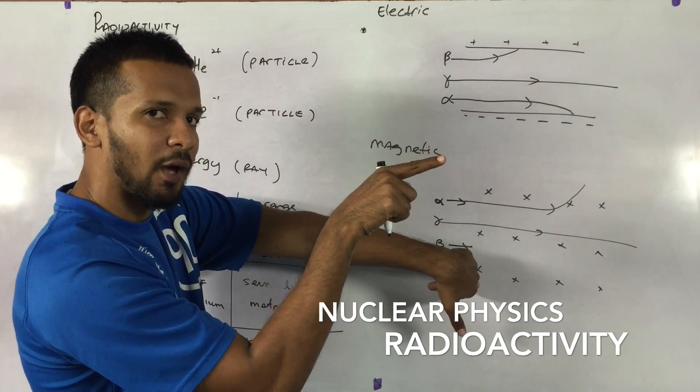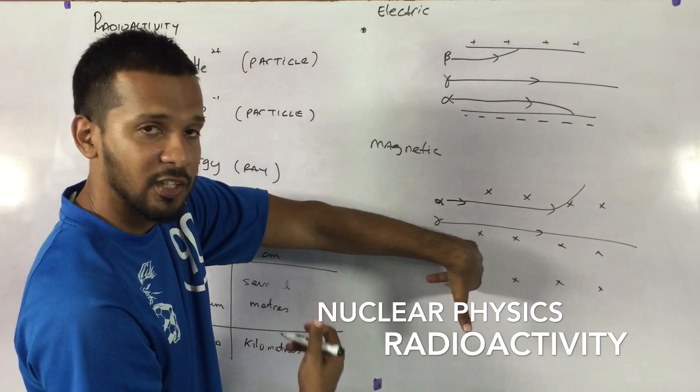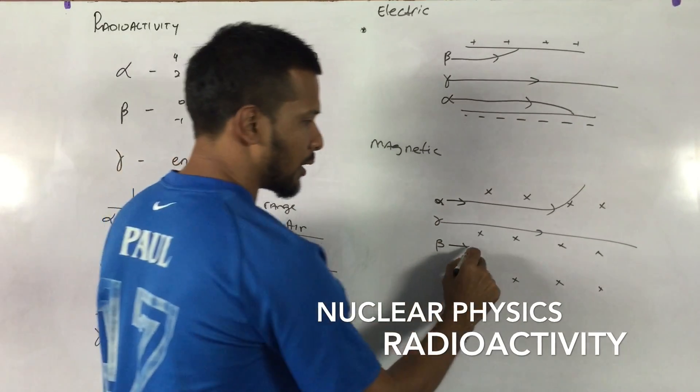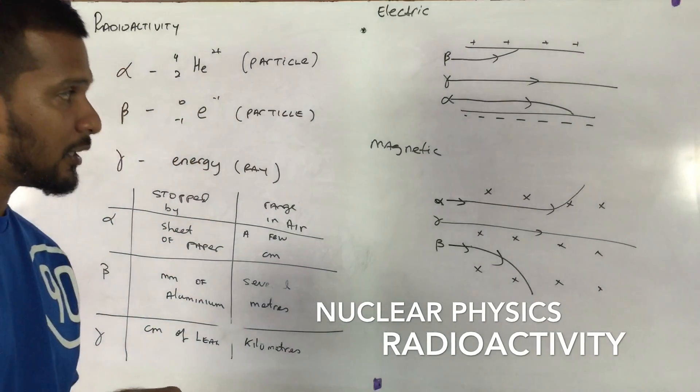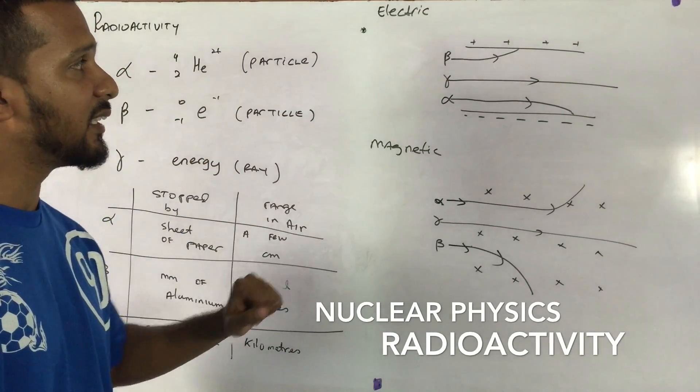This is beta. Beta is going this way. So a positive charge would be going in the opposite direction. So therefore, it will go downwards.